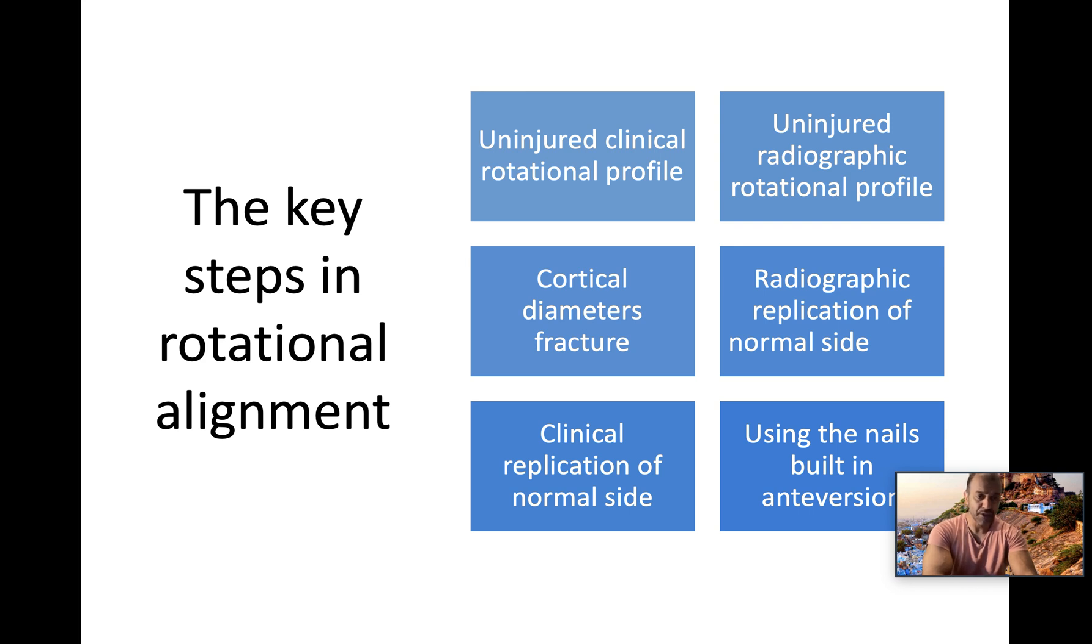Then you can go by other measures of rotational alignment, such as cortical diameters. Radiographic replication of the uninjured side. Clinical replication of the normal side, so looking at if you've got the same amount of internal rotation present on the injured side as you have on the uninjured side. And also, lastly, you can rely on the built-in antiversion within the femoral neck of proximal femoral nailing systems. They aim for a center-center position in the neck and the head. Also, with a true lateral of the knee and perfect circles, means that you've got 15 to 20 degrees of built-in antiversion.